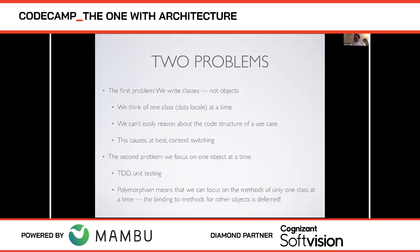In thinking about one method at a time, we're creating bottom-up procedural hierarchies. All the research data substantiate this — there are many published papers. TDD basically destroys your architecture because it empirically leads to a bottom-up procedural architecture. This has been measured and published. There's very sound theory behind this.